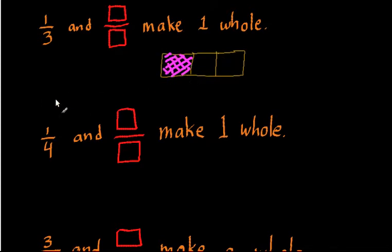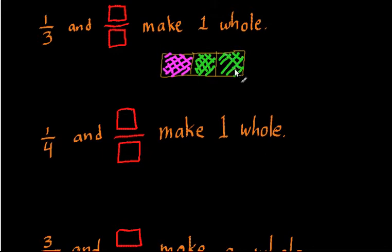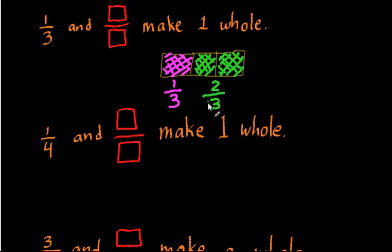Now, how much more do I need to shade in to get the whole rectangle? Well, what I have to shade in to get the rest of the rectangle is these other two squares. So I've shaded in one square and now a second square. So I've taken my initial rectangle, divided it up into three. I have 1 third of the rectangle represented by this one square here. And to get the remaining part, I have to look at these two green squares, which constitute two squares out of a total of three squares. So 1 third and 2 thirds together make one whole.